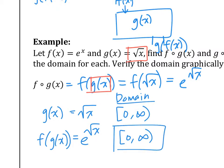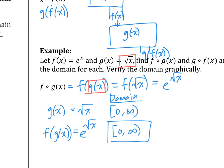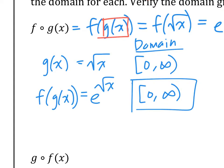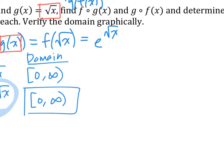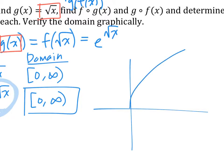So this is the domain. Let's verify this graphically. Remember, anything you do algebraically should also verify on your graph — they would all say the same thing. You're going to graph this on your calculator and check the domain: look at your graph and say, what are all the x values that show up? If you graph this, you're going to see something like this. The graph kind of looks something like that, and you can see the domain is zero and above. So everything should all match up.